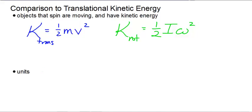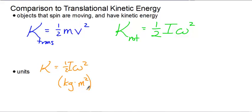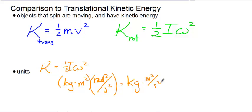If we express our units here, K equals ½Iω². Our units for I are kilograms·meters². Our units for omega are radians per second, but we're going to square that — radians² per second². The radians cancel out, so you get kilograms·meters² per second², and that is a joule. So our unit for rotational kinetic energy is the same as it was for translational kinetic energy — it is still the joule.